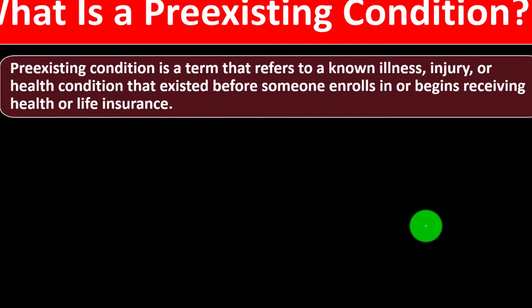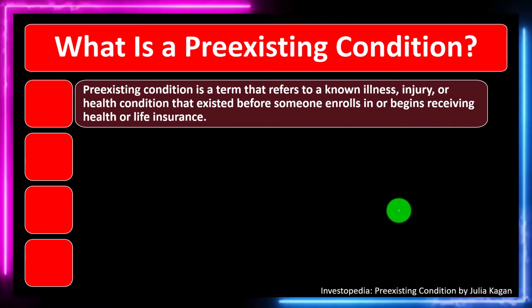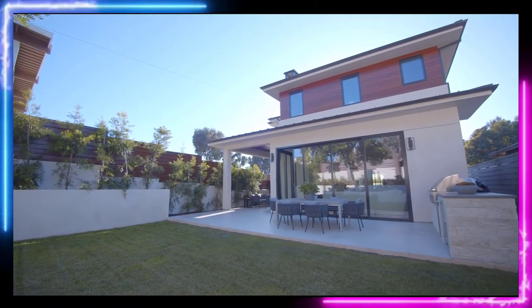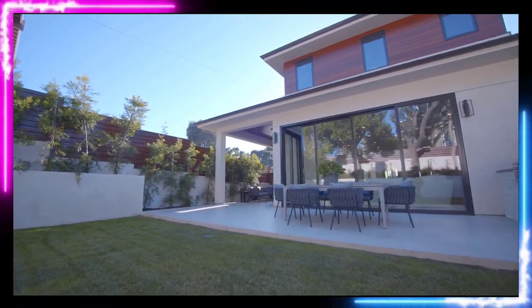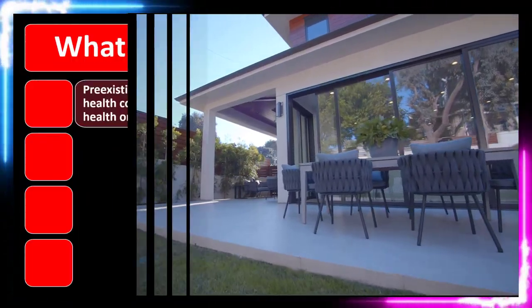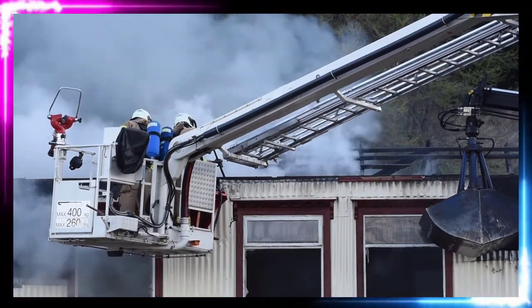The political discussion concerns what do we do about pre-existing conditions and how might they impact people's ability to get health insurance. A pre-existing condition is a term that refers to a known illness, injury, or health condition that existed before someone enrolls in or begins receiving health or life insurance. When we think about normal kinds of insurance — comparing this to property insurance, for example — we're usually trying to safeguard against some kind of future event where hopefully the likelihood of it happening might be small, but if it were to happen, like a home burning down, it would be financially devastating.